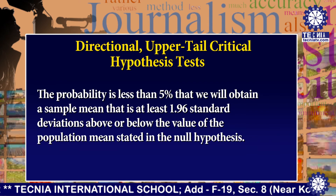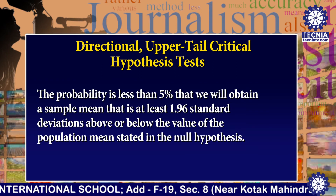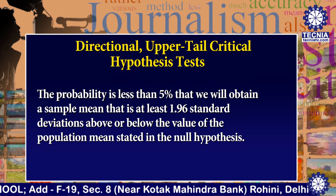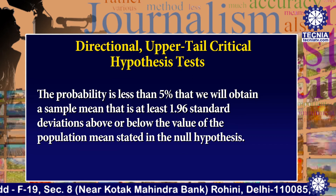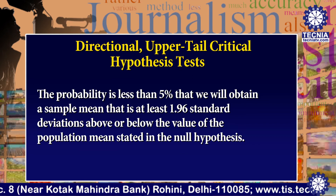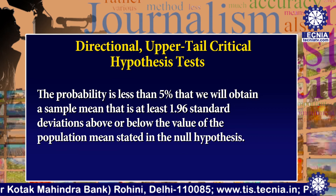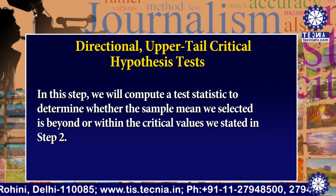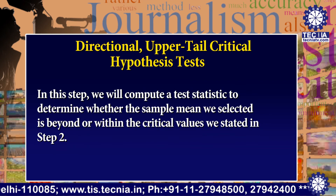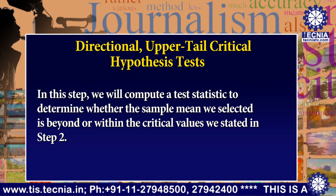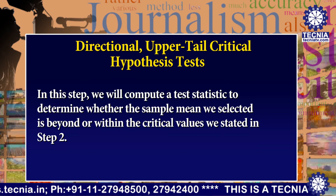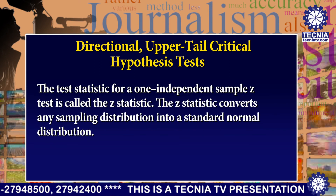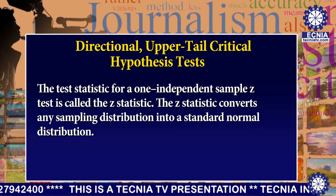Now I am explaining Step 3. In this step we will compute a test statistic to determine whether the sample mean selected is beyond or within the critical values stated in Step 2. The test statistic for the one independent sample Z test is called the Z statistic. The statistic converts any sampling distribution into a standard normal distribution.